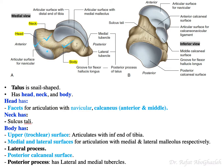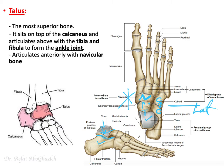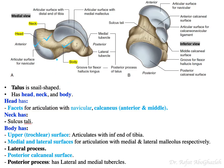What are the important features of the head? We know the talus articulates anteriorly with the navicular bone, so there must be an articular surface on the head for the navicular. Looking from an inferior view, we can still see the articular surface anteriorly for the navicular bone, and the head also has two additional facets.